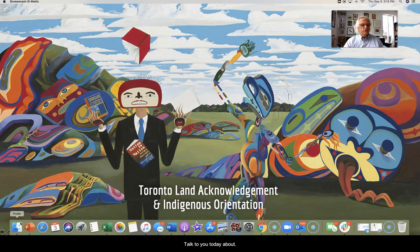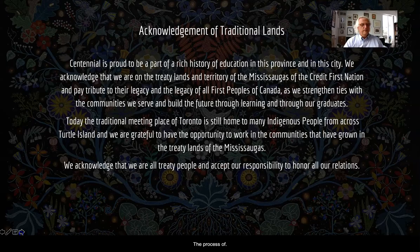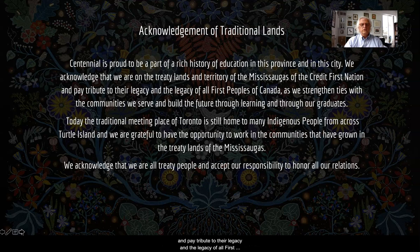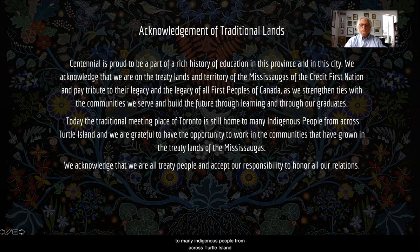Today I want to talk about the process of how this came to be — this idea of land and whose land it is. This is Centennial's land acknowledgement of traditional land. It reads: 'Centennial is proud to be part of a rich history of education in this province and city. We acknowledge that we are on the treaty lands and territory of the Mississaugas of the Credit First Nation and pay tribute to their legacy and the legacy of all First Peoples of Canada. Today the traditional meeting place of Toronto is still home to many indigenous people from across Turtle Island. We acknowledge that we are all treaty people.'